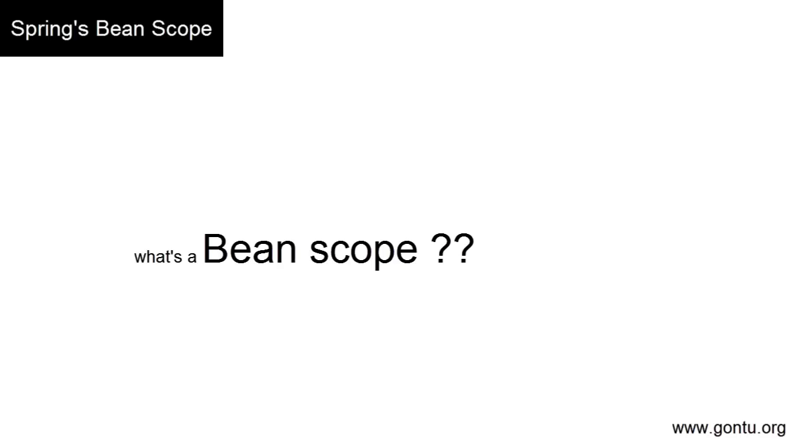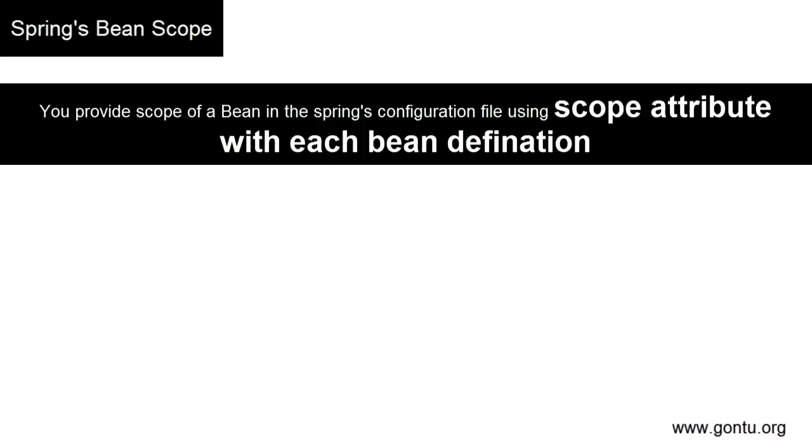Now let's move ahead. In this tutorial we're going to look at some important configurations you can set in the Spring configuration file for a bean scope. Before we see the demo, let's look at the concept first. What is a bean scope? While defining a bean in the Spring configuration file, Spring gives you an option to declare its scope value using the scope attribute.